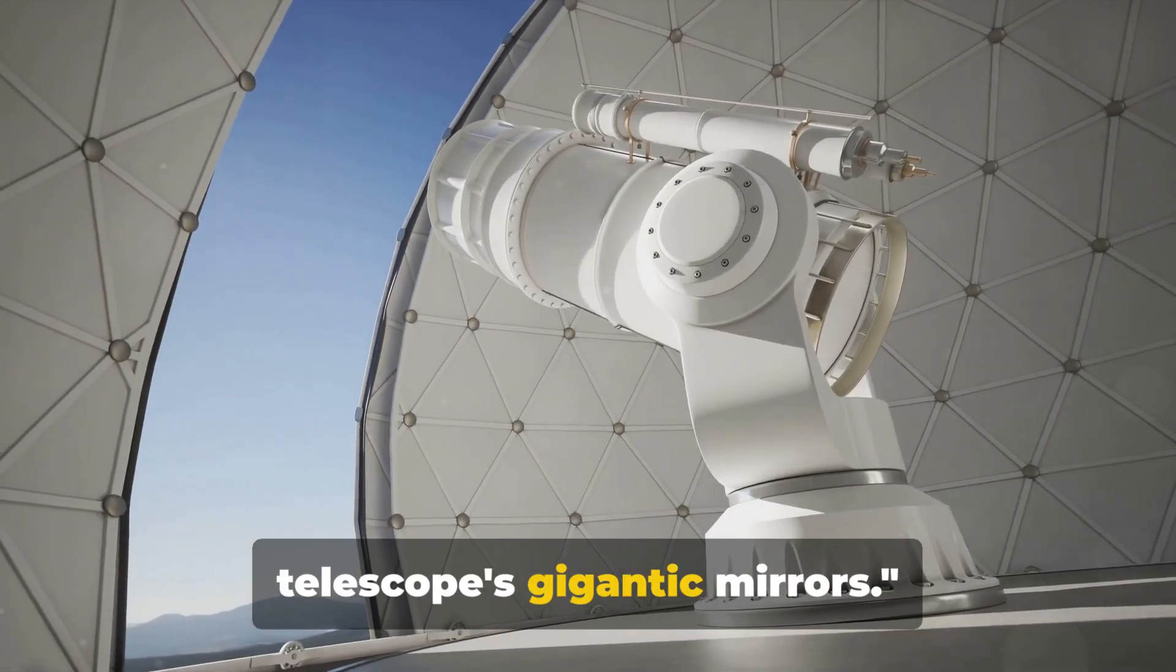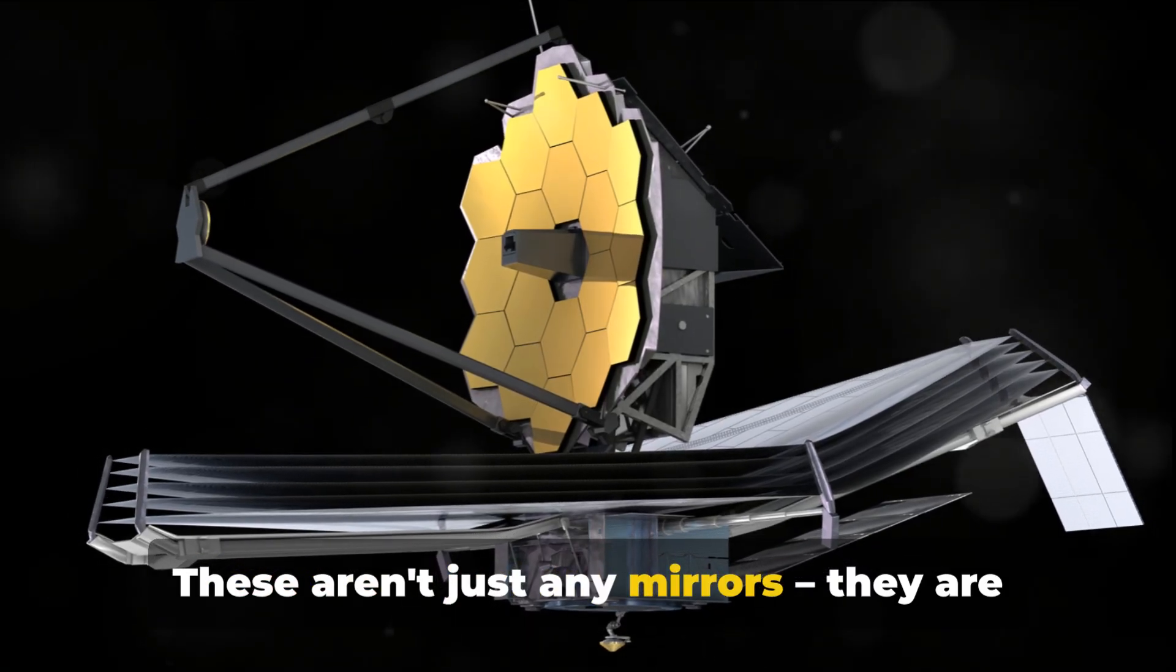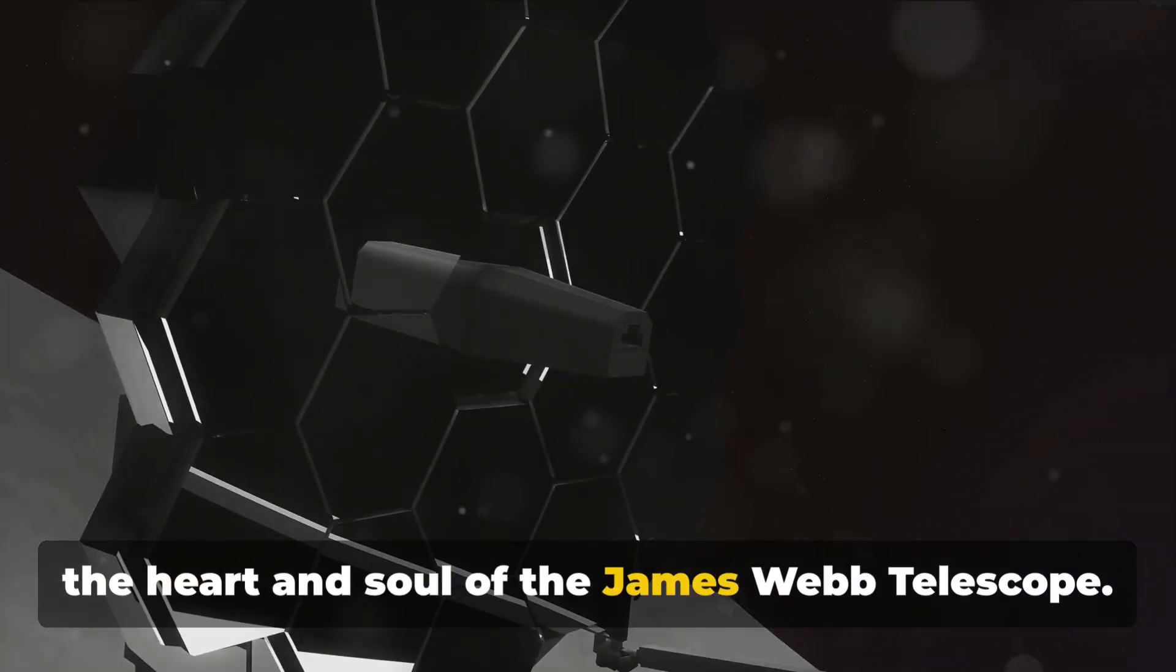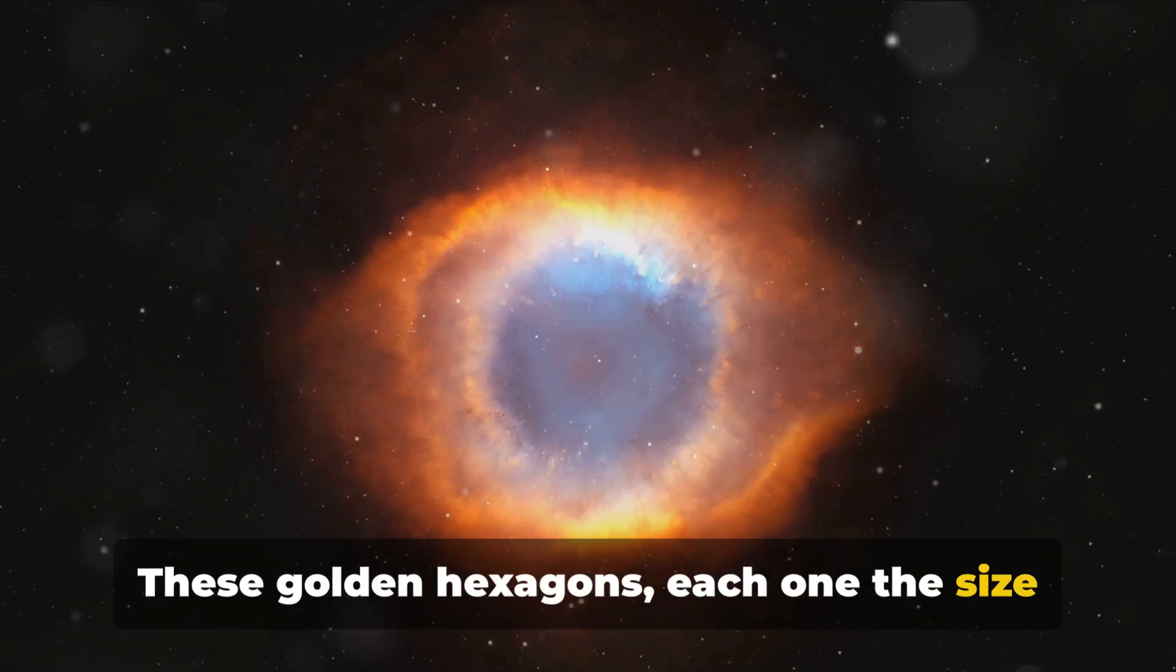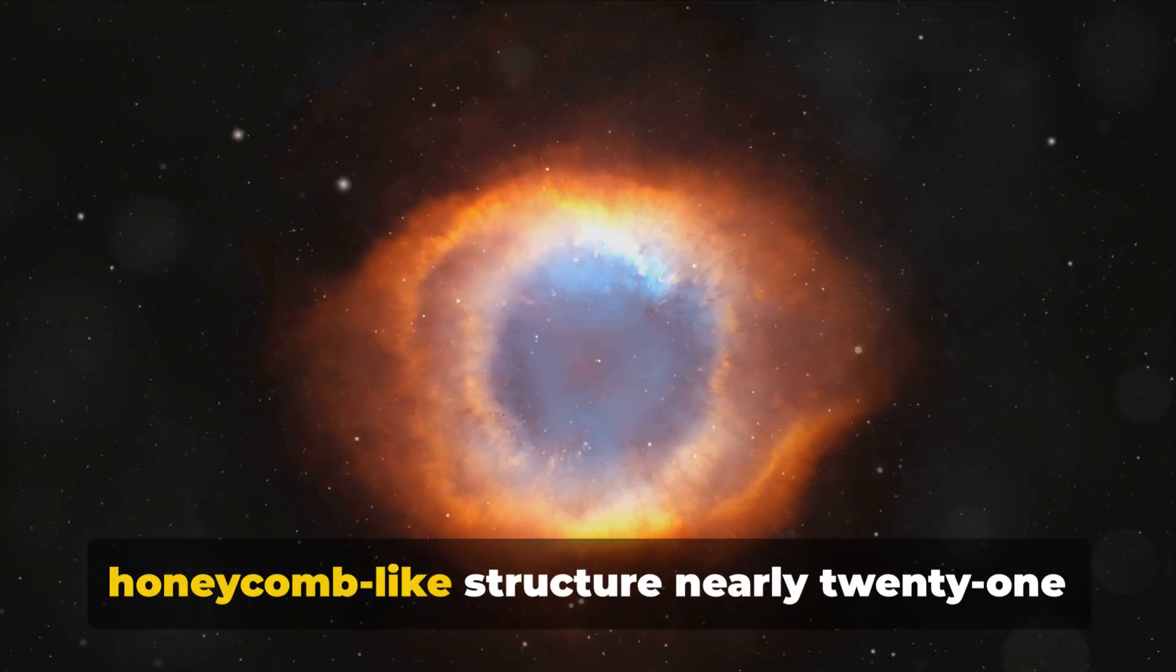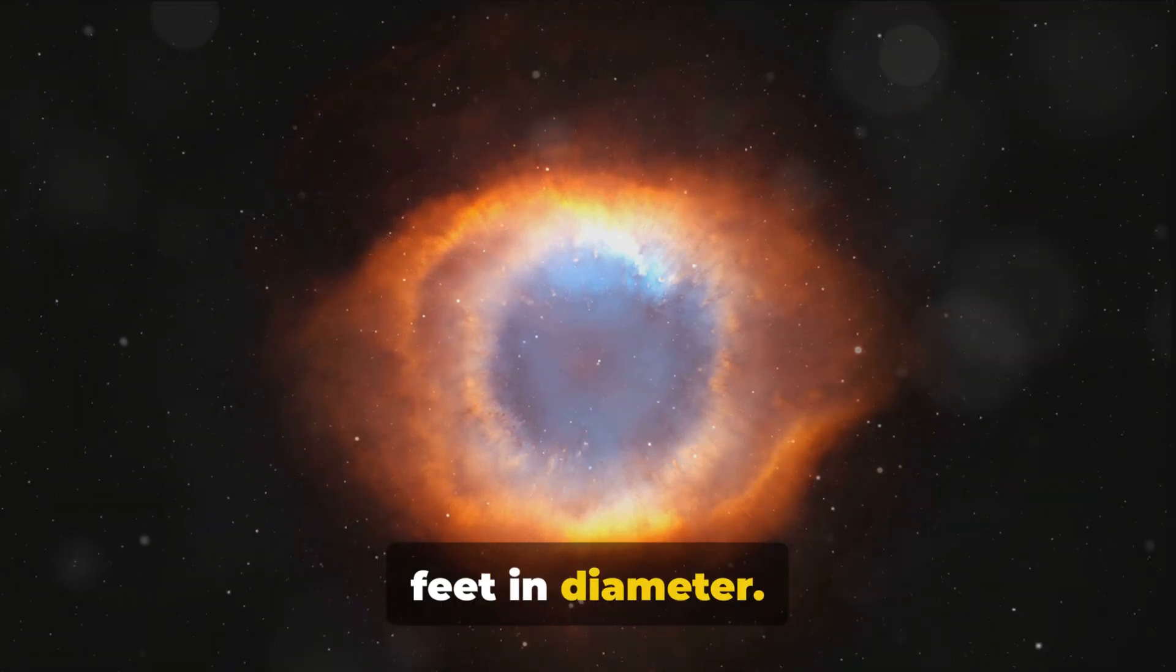One of the most critical moments in the journey was the unfurling of the telescope's gigantic mirrors. These aren't just any mirrors. They are the heart and soul of the James Webb Telescope. These golden hexagons, each one the size of a coffee table, work together to form a honeycomb-like structure nearly 21 feet in diameter.